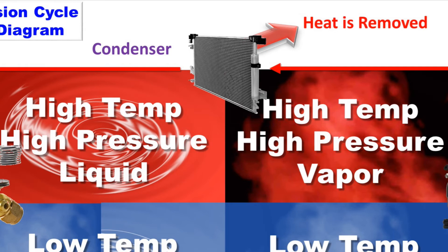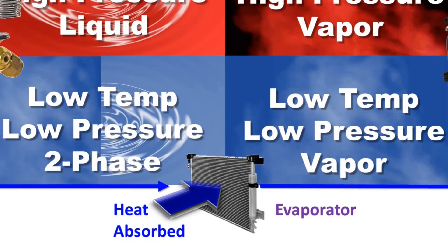The high pressure, high temperature upper half allows the refrigerant to become significantly hotter than ambient air, forcing heat transfer. The low temperature, low pressure half of the cycle allows the refrigerant to absorb heat from a source that is not as hot as the environment. The compressor does the work to raise the pressure and the expansion valve ensures that adequate pressure is retained for heat transfer.